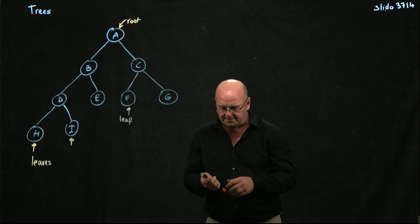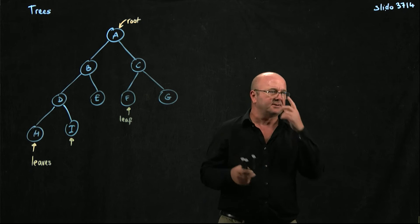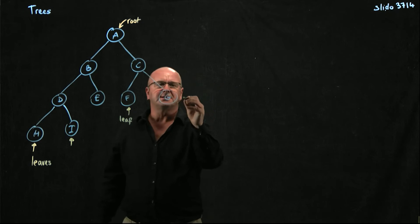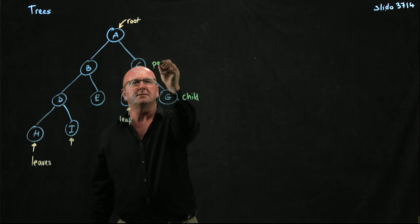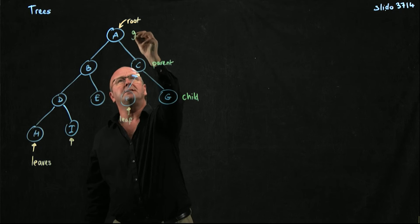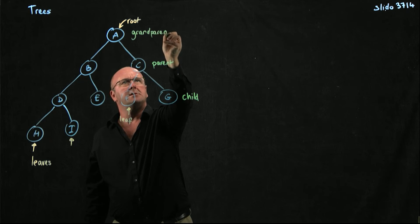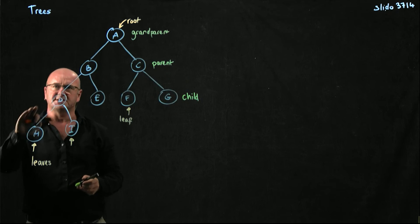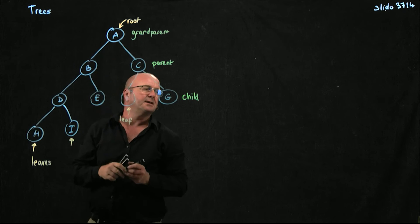So we've got the root, and then we have some nomenclature which is sort of based on ancestry. So this is a child. This is its parent. And this is his grandparent. H is a child of D. D is a child of B. B is a child of A, and so on.